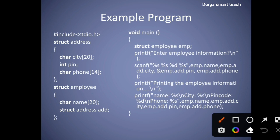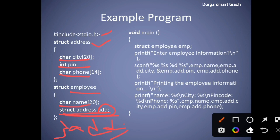In the code example, first is #include stdio.h, the header file. Program execution starts from the main function. Before that, we are declaring two structures. Here struct address has members: char city, int pin, and char phone_number. Next, we are declaring one more struct employee with char name, and inside it, struct address add as a member. You can declare a member variable as 'struct address add' or use the syntax: struct structure_name variable_name.